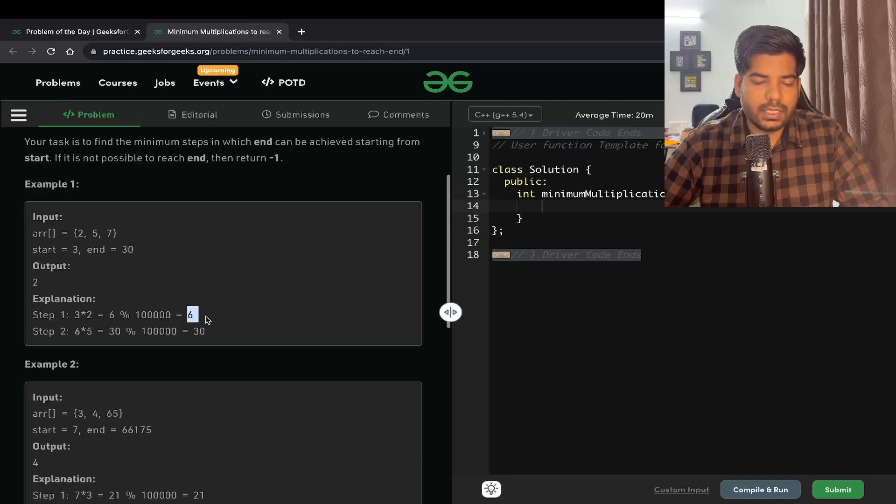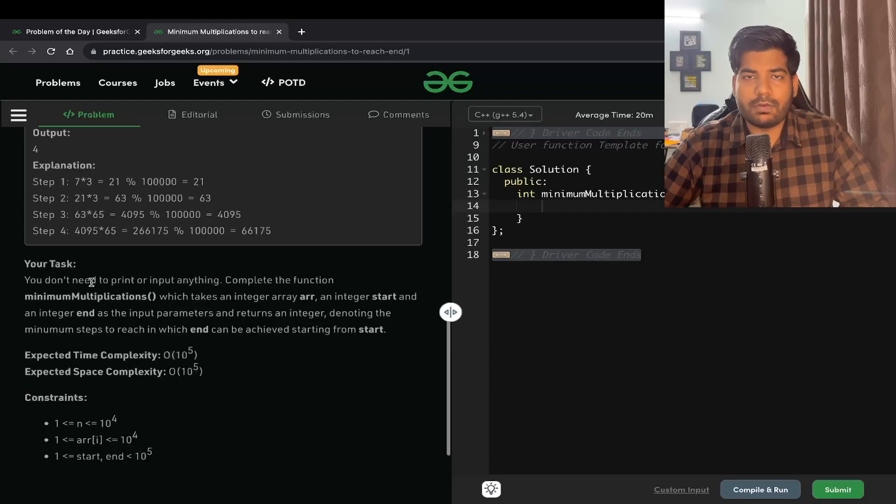Basically, we will first multiply 3 by 2, so we will get 6. When we do 6 modulus 10 to the power 5, we get 6. Then if we multiply 6 with 5, we get 30. And when we do modulus we get 30. So 30 is my end. We reach there in two steps, so 2 is going to be my output. I hope you have understood the problem.